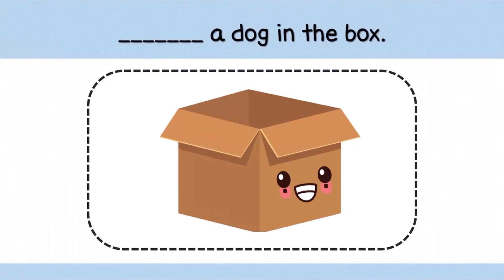เราลองมาเติมดูนะคะว่านักเรียนจะเติม There isn't หรือ There aren't ประโยคนี้บอกว่า A dog in the box คำว่า box แปลว่ากล่อง A dog แปลว่าสุนัข ถ้านักเรียนเห็น A dog นักเรียนควรจะเติม There isn't ค่ะ จะได้เป็น There isn't a dog in the box แปลว่า ไม่มีสุนัขอยู่ในกล่องเลย